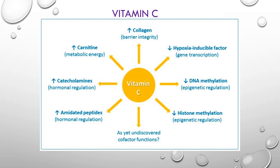Vitamin C is also needed for apoptosis and clearance of spent neutrophils from sites of infection by macrophages, thereby decreasing necrosis and potential tissue damage. The role of vitamin C in lymphocytes is less clear, but it has been shown to enhance differentiation and proliferation of B and T cells, likely due to its gene-regulating effects.